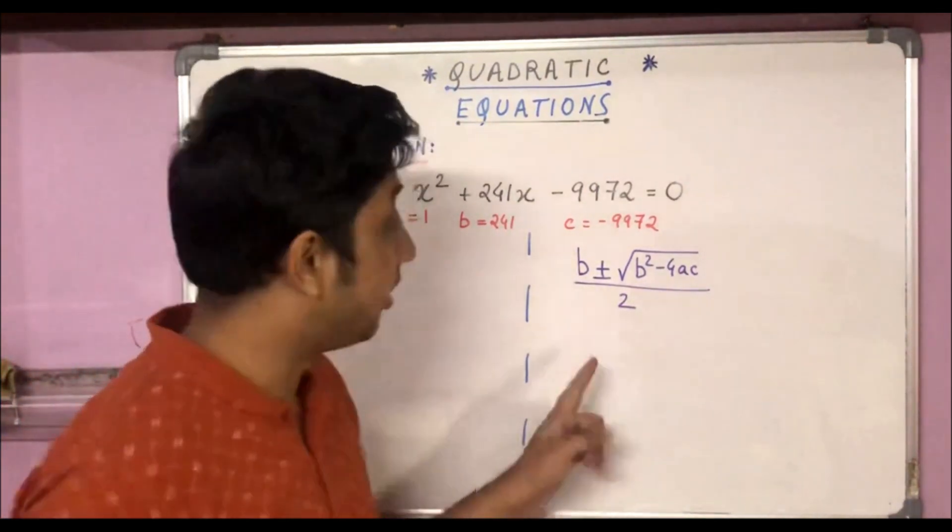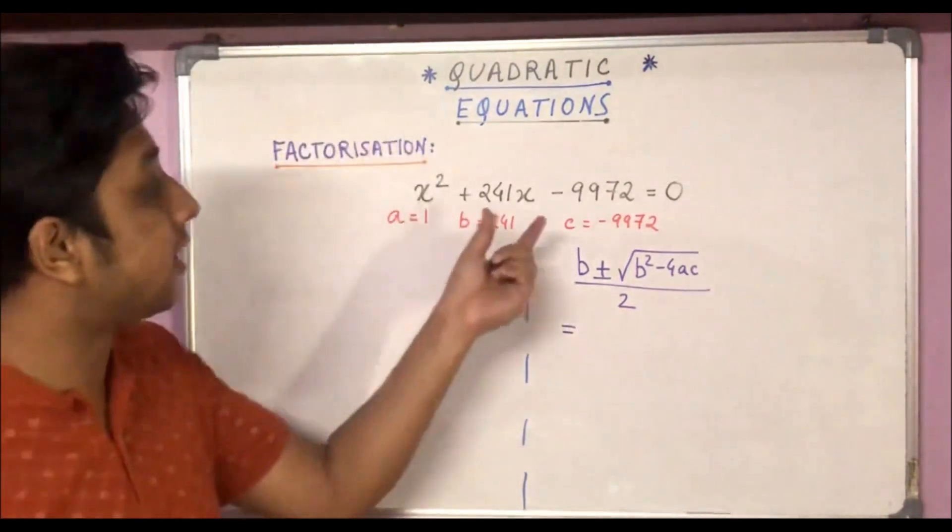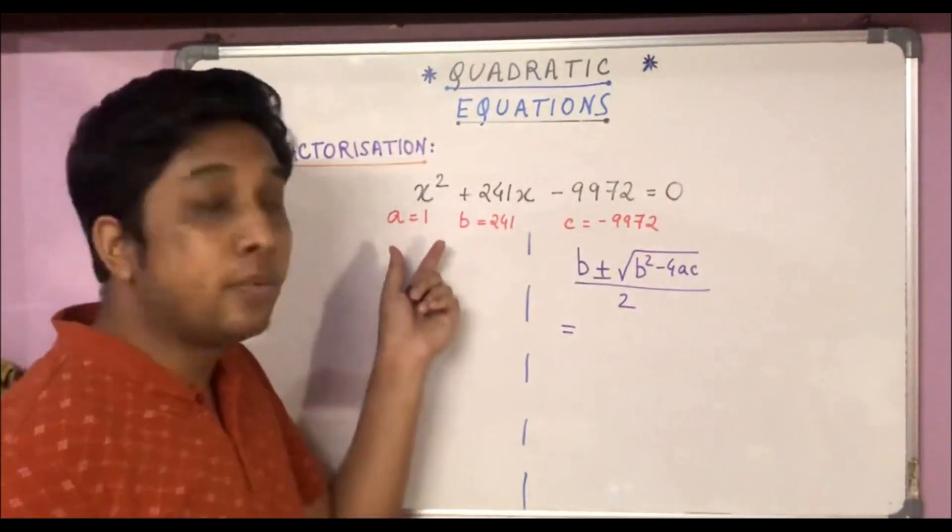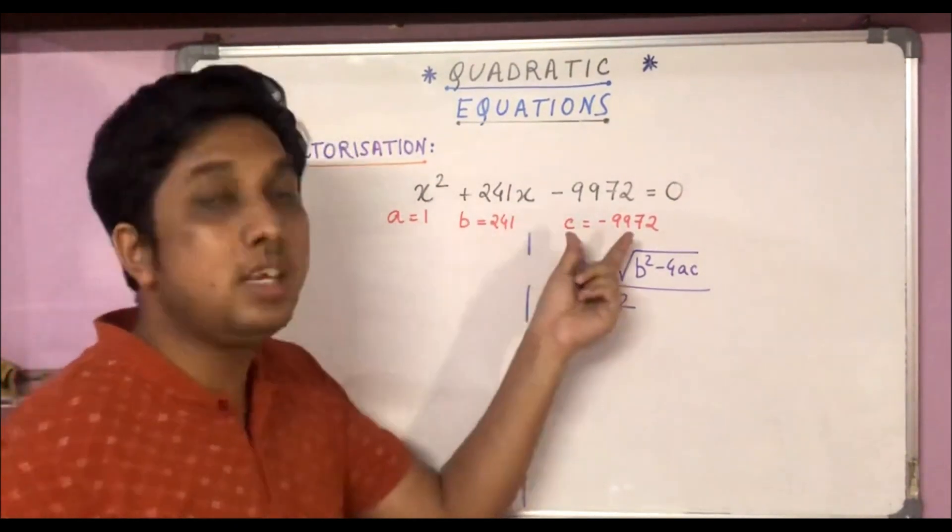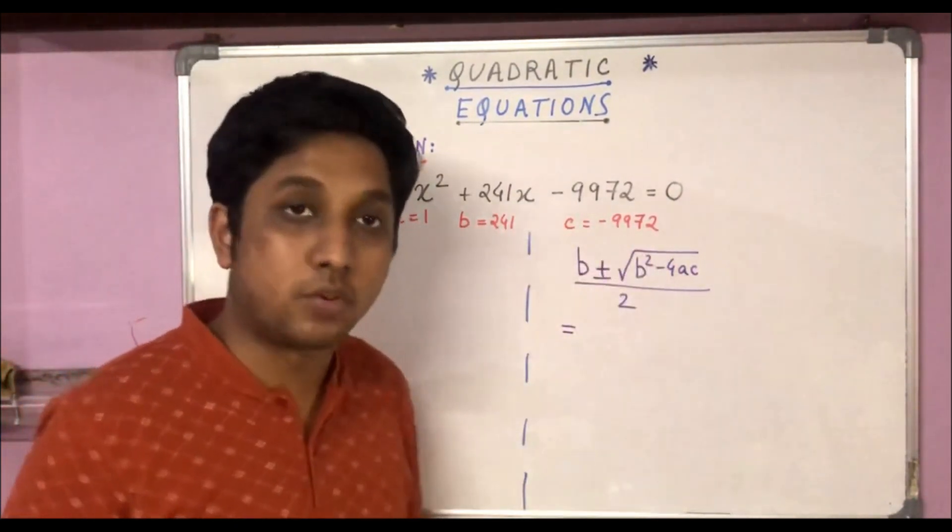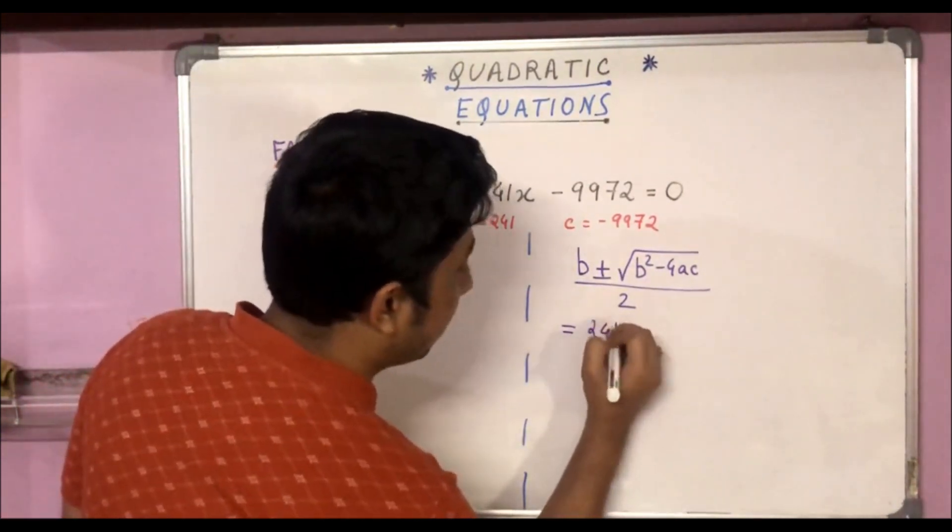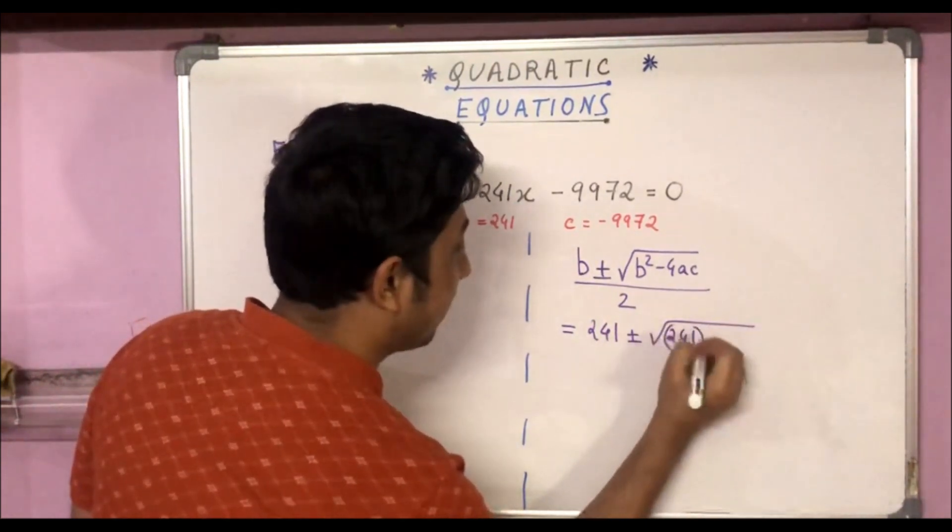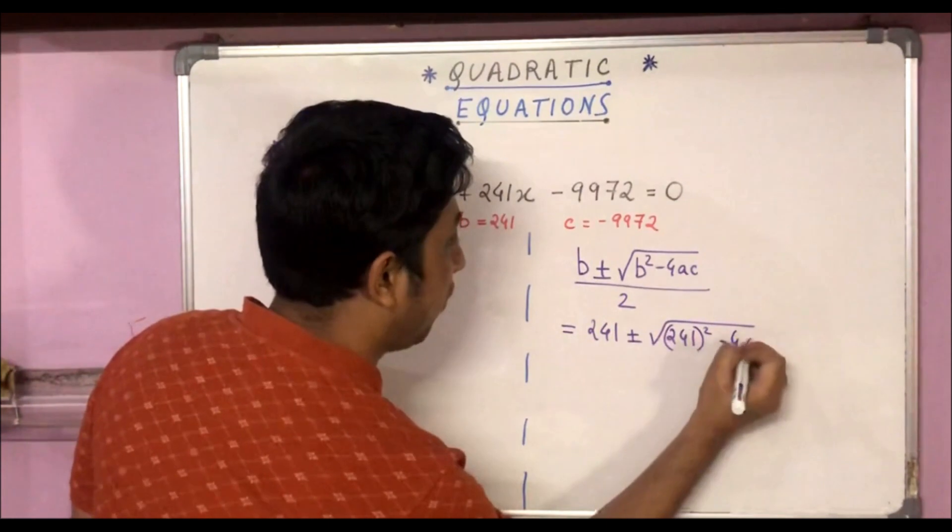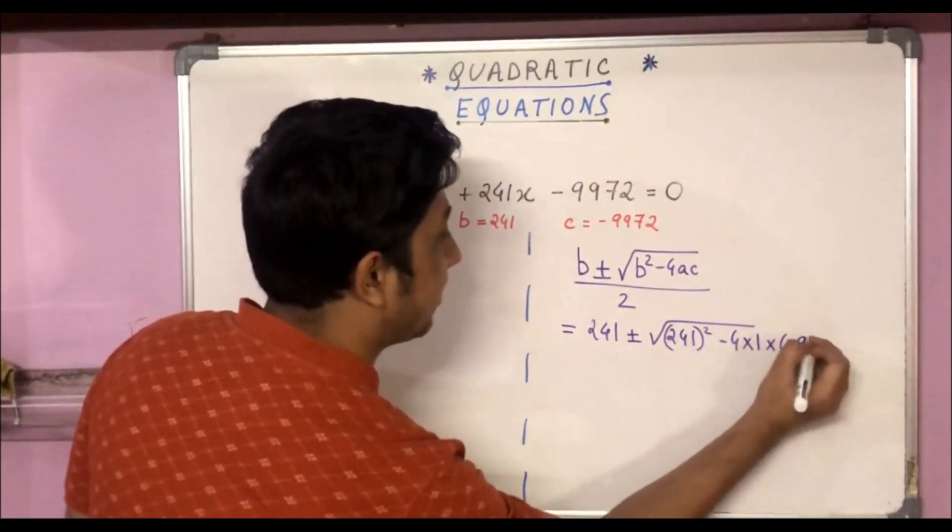Let's put the values. I've already marked a, b, and c. Comparing with the standard form, a = 1, b = 241, and c = -9972.